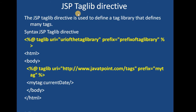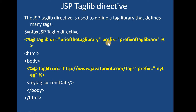The third directive is the taglib directive, which is used to define tag libraries that define many tags. The syntax is similar — we use the at-rate symbol to identify it as a directive, then the 'taglib' directive name, then the URI attribute with its value. We can also have multiple attributes, such as the prefix attribute with its value. This can be saved into a JSP file and executed with the help of the IDE and the container.